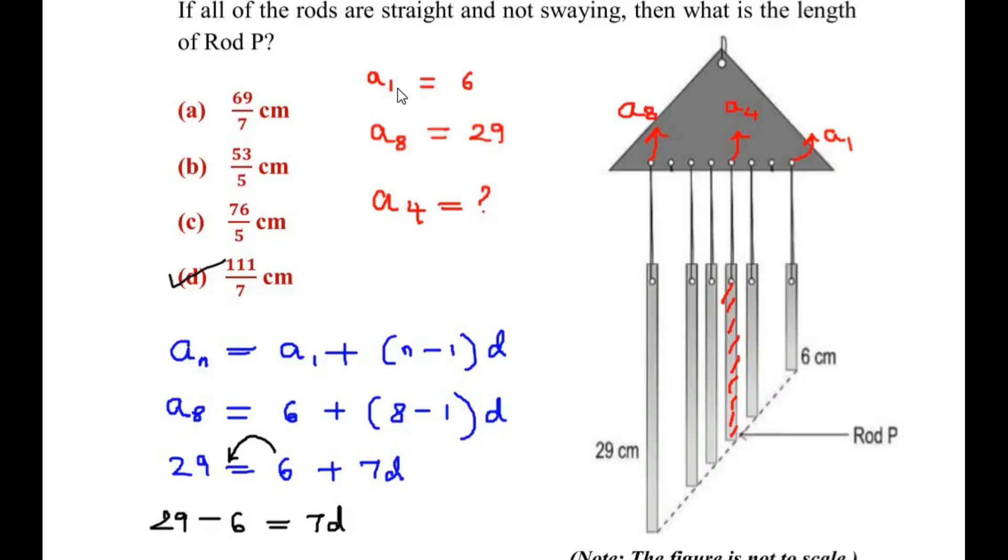Now making use of A1, first term, 8th term, we can find out the length of the 4th term by using the standard equation of the arithmetic progression: An equal to A1 plus (n - 1) times D.